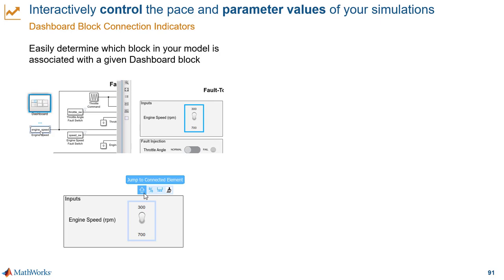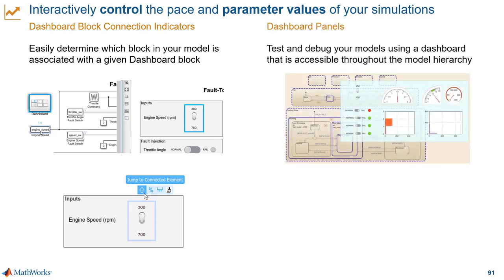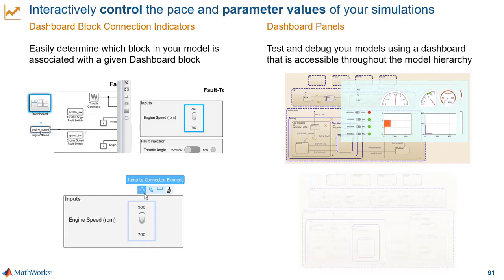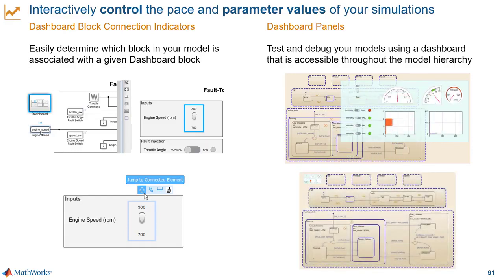You can navigate directly to a connected element from the dashboard block. You can take a set of dashboard blocks and convert it into a panel to access that dashboard throughout the model hierarchy. So you can jump in and out of referenced models, subsystems, and Stateflow charts, and always see those indicators — which can be valuable for testing and debugging workflows. When you're not using a panel, you can just double-click it to minimize it, so it stays visible but takes up less space.